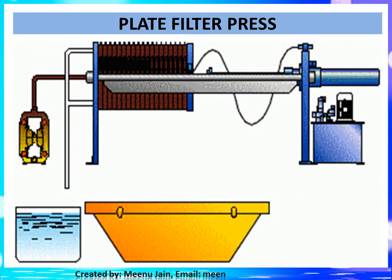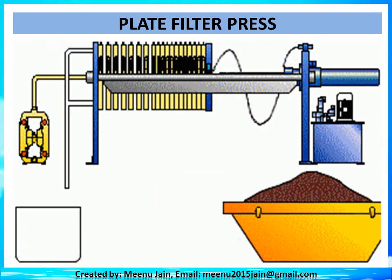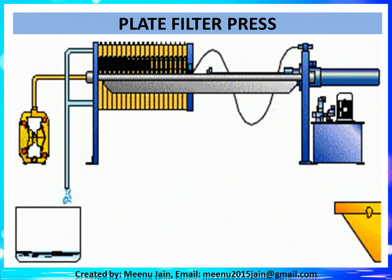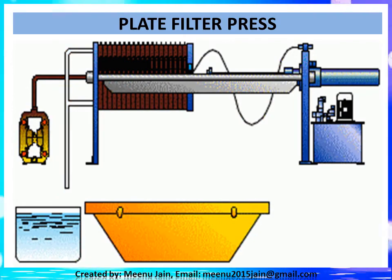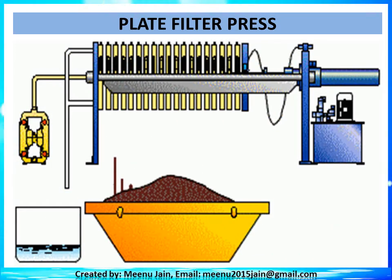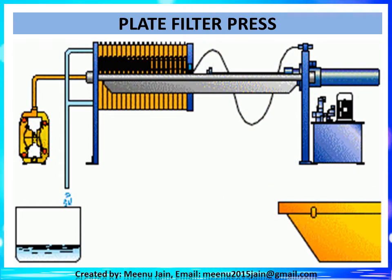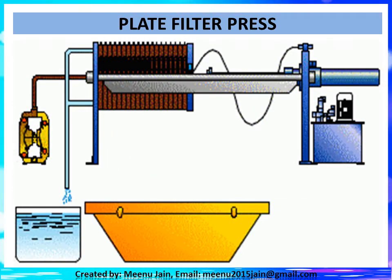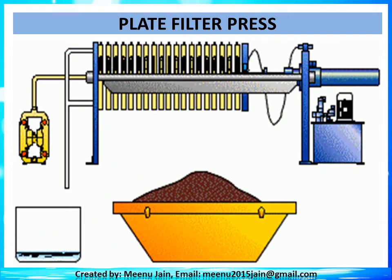The next sludge dewatering unit is the filter press. Dewatering is achieved by forcing water from sludge under high pressure. Chemically conditioned sludge is pumped into spaces between plates, and pressure of 690 to 1550 kN/m² is applied and maintained for 1 to 3 hours, forcing liquid through the filter cloth and plate outlet ports. Sludge cake thickness varies from 25 to 38 mm, moisture content from 48 to 70%, and filtration cycle from 2 to 5 hours. High cake solid concentration with good filtrate quality and high solid capture is achieved, but mechanical complexity, high chemical cost, high labor cost, and limitations on filter cloth life are disadvantages.